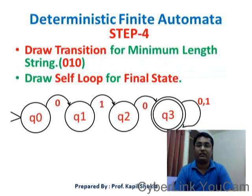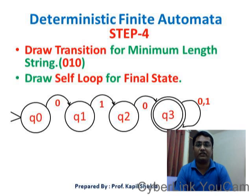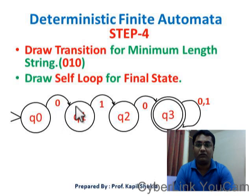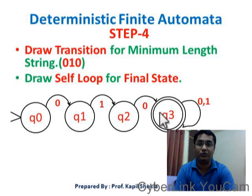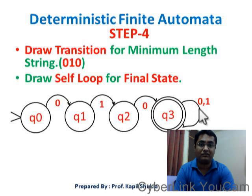Step 4: draw the transition for the minimum length string. So 010 is the minimum length string. We have drawn the transition: 0 from Q0 to Q1, 1 from Q1 to Q2, and 0 from Q2 to Q3. Then draw a self loop for the final state — you can see there is a self loop for 0 and 1 on Q3.